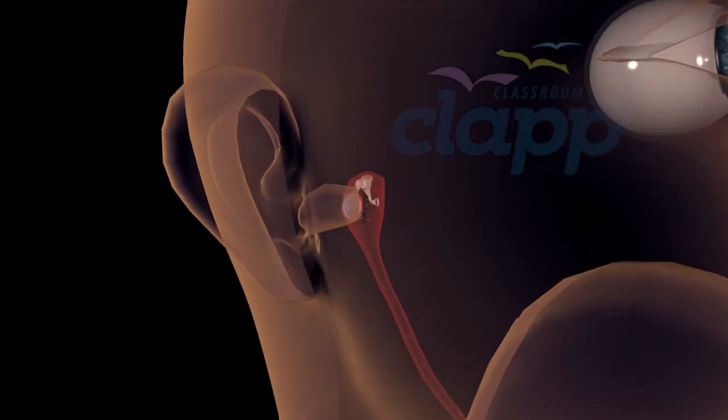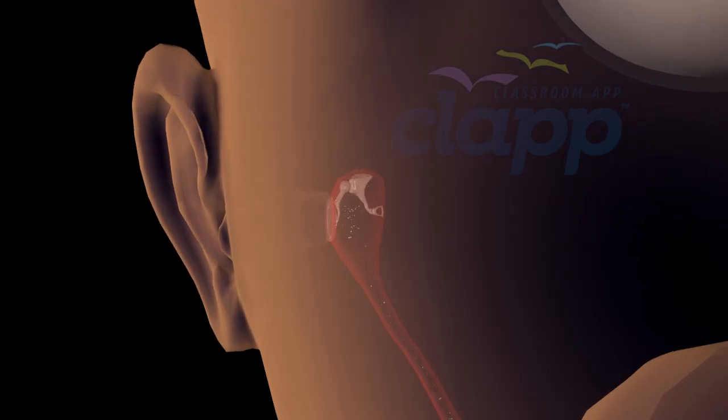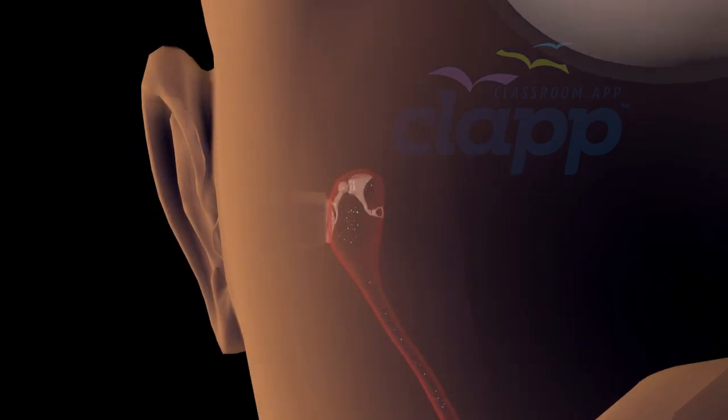The middle ear is a small, air-filled cavity located between the outer ear and the inner ear.